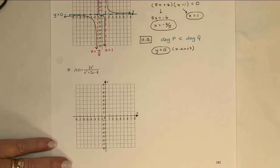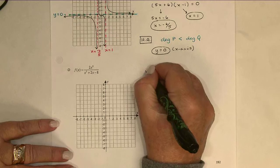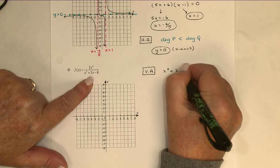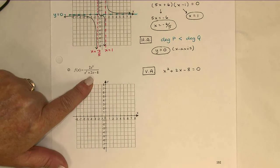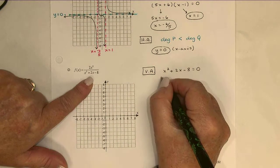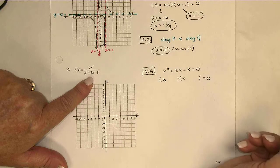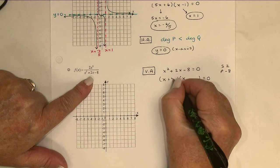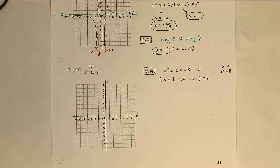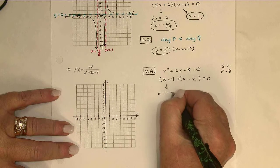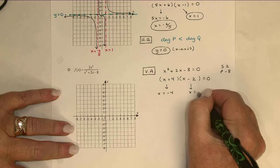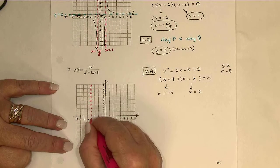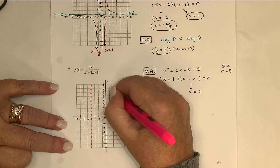So a combination of finding asymptotes by hand, but then using the calculator to help us see what the graph looks like, is what we're going for here. Let's try another one. Here's my function. Beginning by looking for my vertical asymptotes, I know they occur when the denominator is zero. Exactly the same places where I would have to throw values out of the domain.